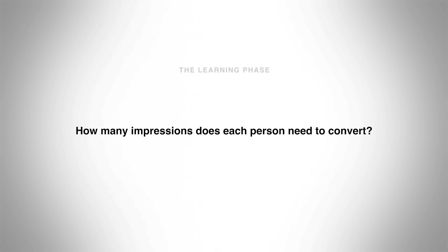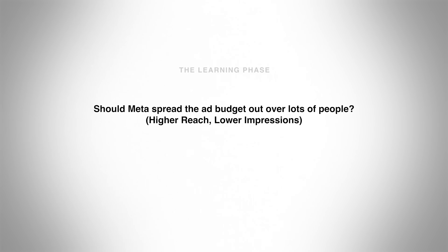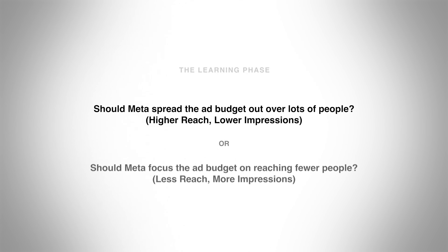In the learning phase, they're also going to work out how many impressions on average each person needs to convert — to go ahead and purchase or become a lead or whatever. Is it two impressions? Is it six? They'll work that out. Is it better to spread your ad budget across lots of people but quite thinly, where each person gets one or two impressions, or is it better to concentrate those impressions so each person gets six, seven, eight impressions but fewer people actually see your ads?